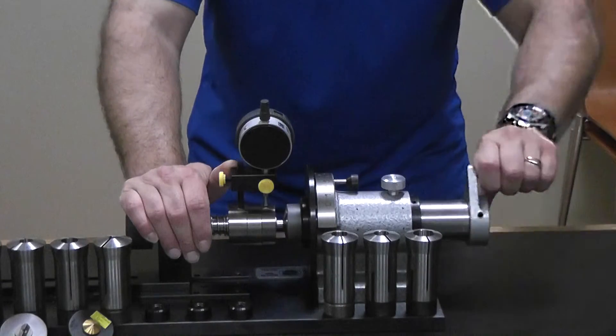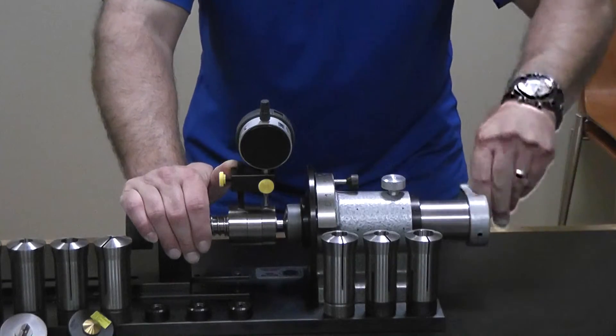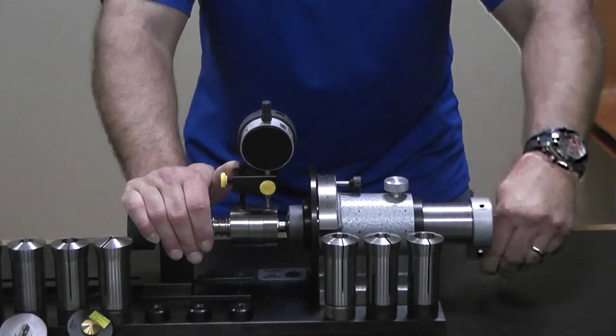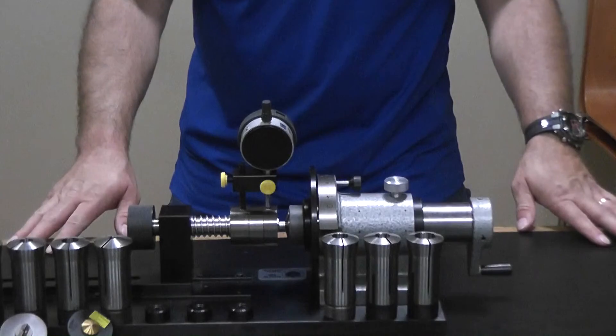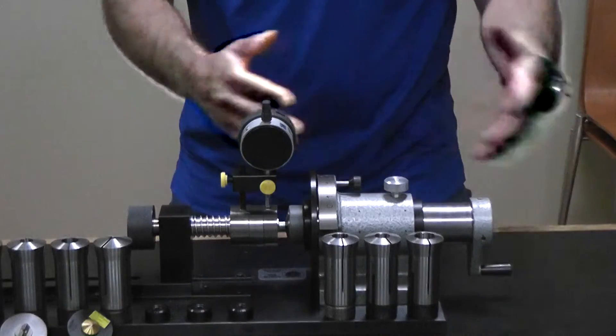And then we just back it up doing the same thing. Once that's done, the TIR function measures the highest. It's the total indicator run out.